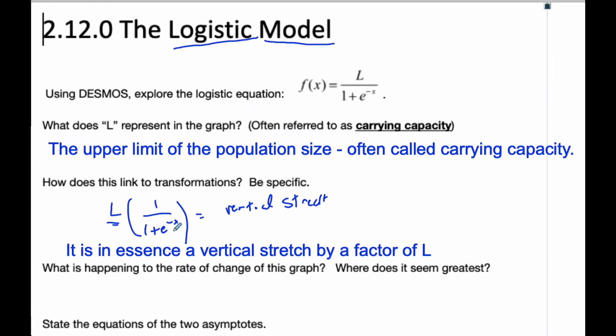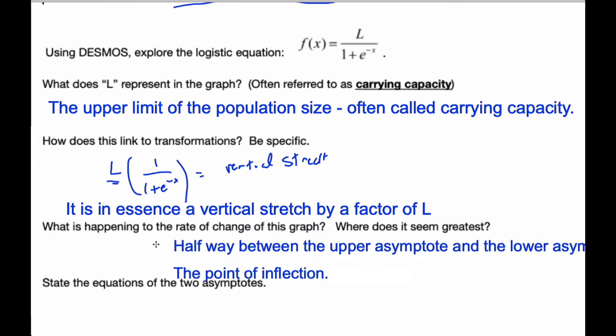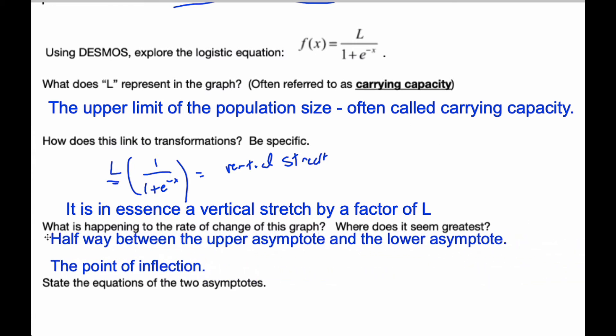So what is happening to the rate of change in this graph? Well, what's happening is it starts off small, and then halfway between the upper asymptote and lower asymptote, there's a point of inflection. And at that point, it starts to get smaller again. So the rate of change increases, and then decreases.